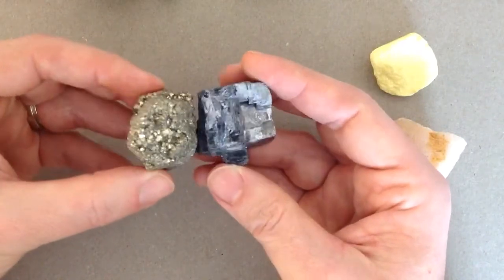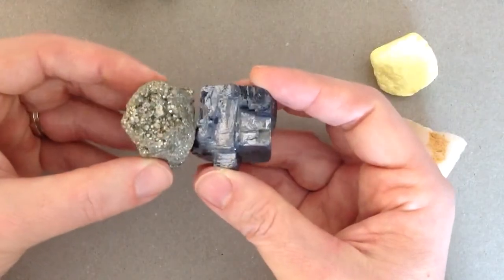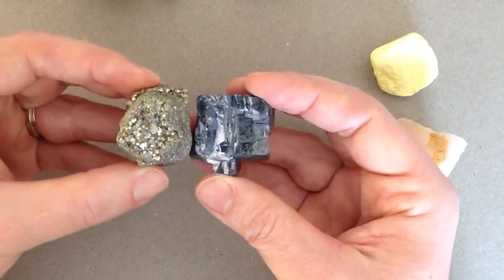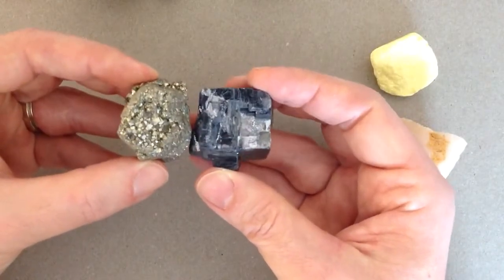One is called metallic. Metallic lusters, your samples look like metal. So these are metallic lusters. They look like chunks of metal.